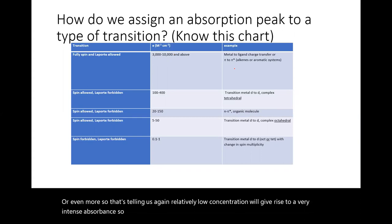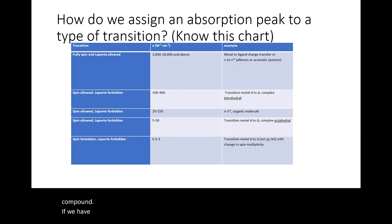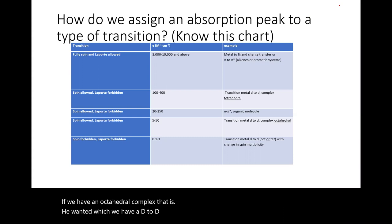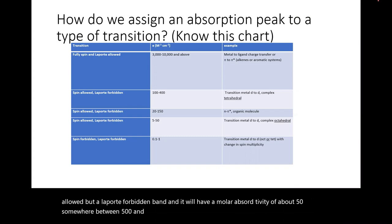Fully allowed transitions occur for metal-to-ligand charge transfer bands (discussed in a following video) or pi-to-pi transitions in typical organic compounds. In an octahedral complex with a d-to-d transition, we get a spin-allowed but Laporte-forbidden band with a molar absorptivity of about 5 to 50. A tetrahedral complex produces an epsilon value on the order of 10 to 400.